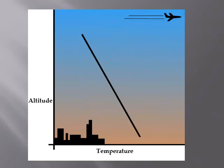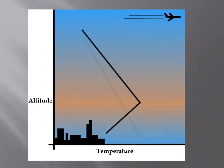Normally, temperatures are warmer at the surface and get cooler as altitude increases. However, sometimes cold air can settle at the ground and the warmer air is actually above the surface, layered between cooler air both above and below. When this situation occurs, it is called an inversion.